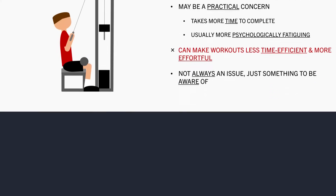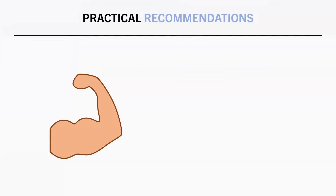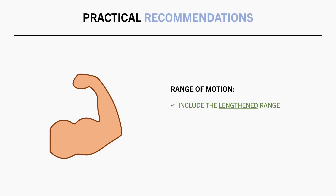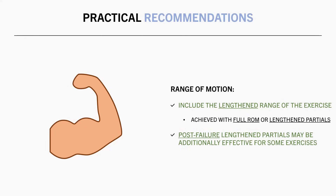This isn't always an issue, but we should be aware that implementing too many unilateral exercises may have some practical downsides. In summary, in terms of range of motion, we want to make sure to include the lengthened range of the exercise. This can be achieved by performing either full range of motion training or partial reps in the lengthened half of the movement. It also seems to be an effective strategy to perform lengthened partials as a way to extend sets after reaching full range of motion failure, for exercises where it makes sense to do so.